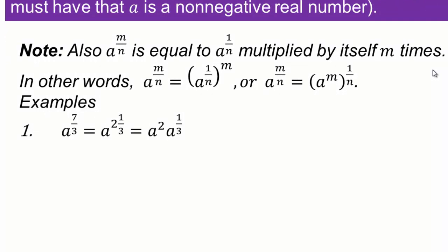Let's look at an example. A to the power 7 thirds — that's the same as A to the power 2 and one third. So if you have an improper fraction, you can write it as a mixed fraction. You already know what A squared means. So you have A squared times A to the one third. We can always write rational exponents so that the numerator is smaller than the denominator using mixed fractions.